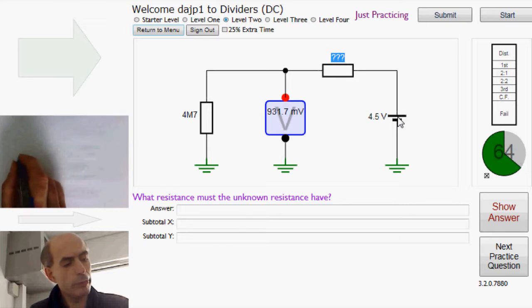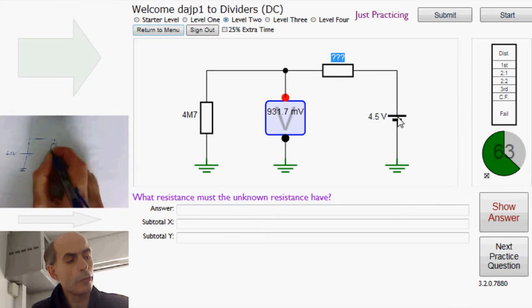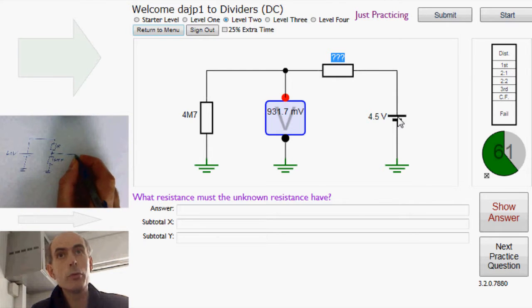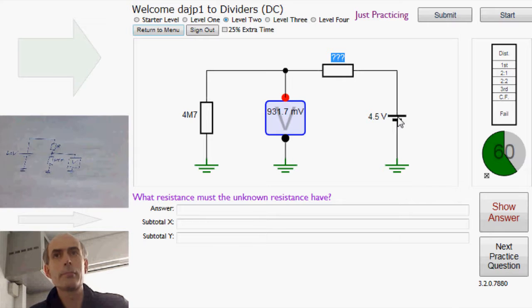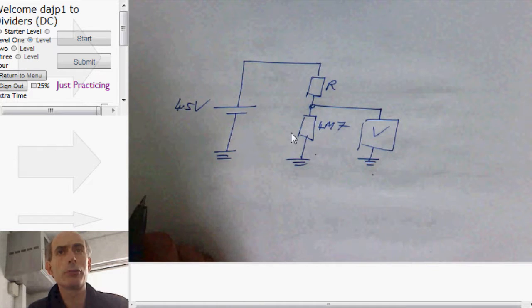So we've got 4.5 volts here, and then the unknown resistance up there, and then a 4 meg 7 resistance there with a voltmeter across it. So that is exactly the same circuit, just drawn so that it looks a bit more like a conventional potential divider.